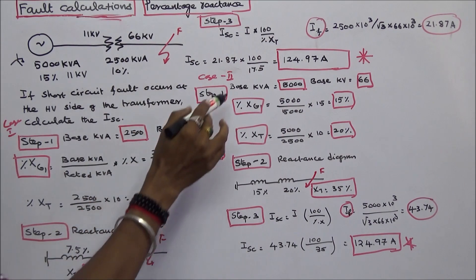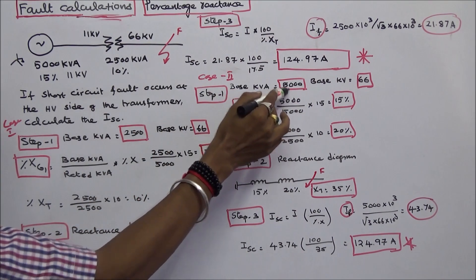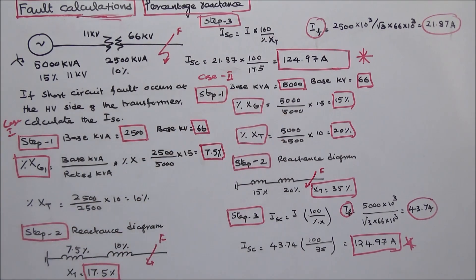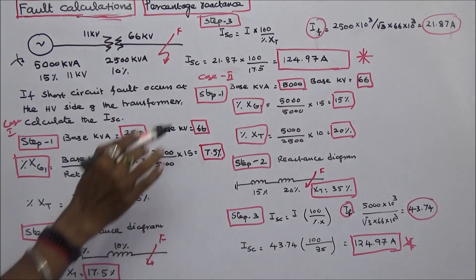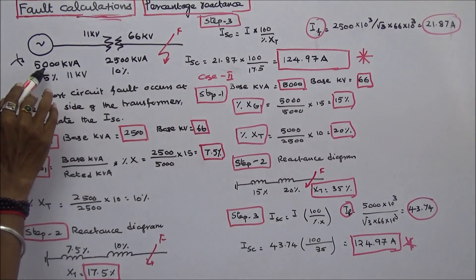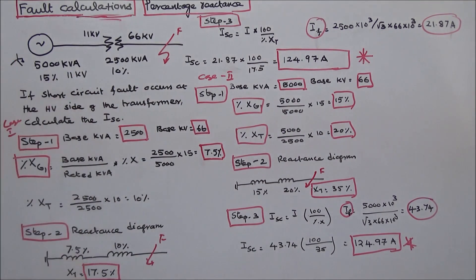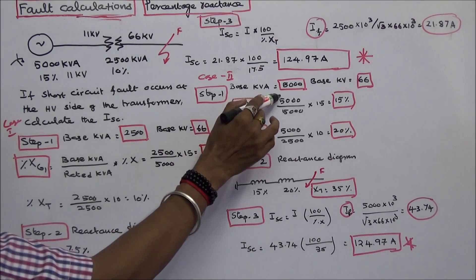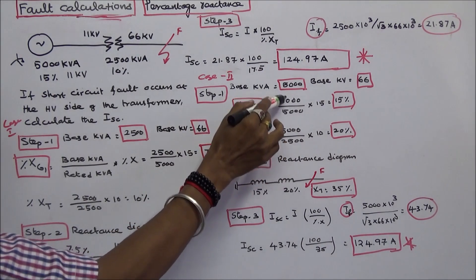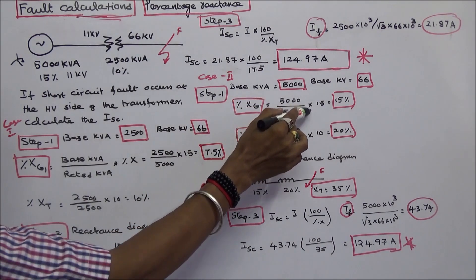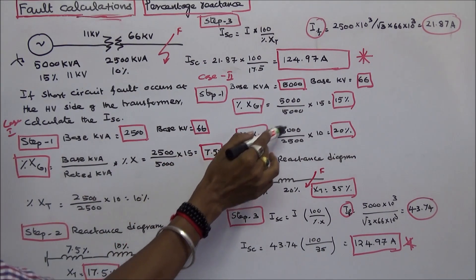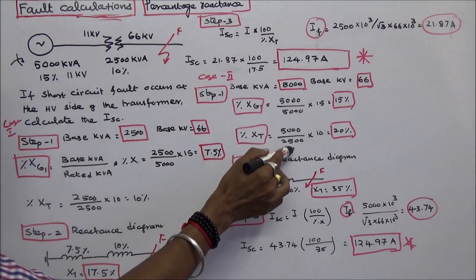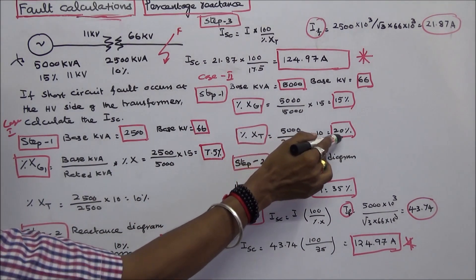Case 2: choose base kVA equal to 5000, base kV equal to 66. Step 1: calculate the percentage reactance of the generator. That is (5000 / 5000) × 15, which equals 15%. For the transformer, percentage X_T is equal to (5000 / 2500) × 10, which equals 20%.